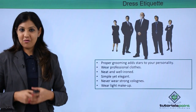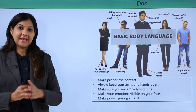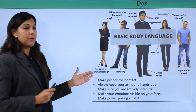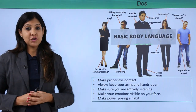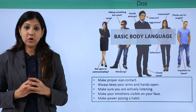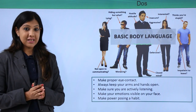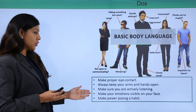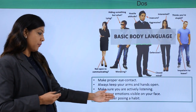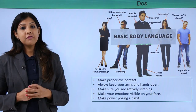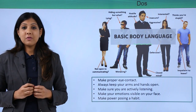Wear light makeup — this is for women. Certain dos in terms of body language to keep in mind as business etiquette: maintain proper eye contact with people, use positive hand gestures, and keep your hands open while talking. Do not fold your arms or put your hands in your pockets — this is very negative body language. Make sure you are actively listening and making your emotions visible on your face. Make power posing a habit.